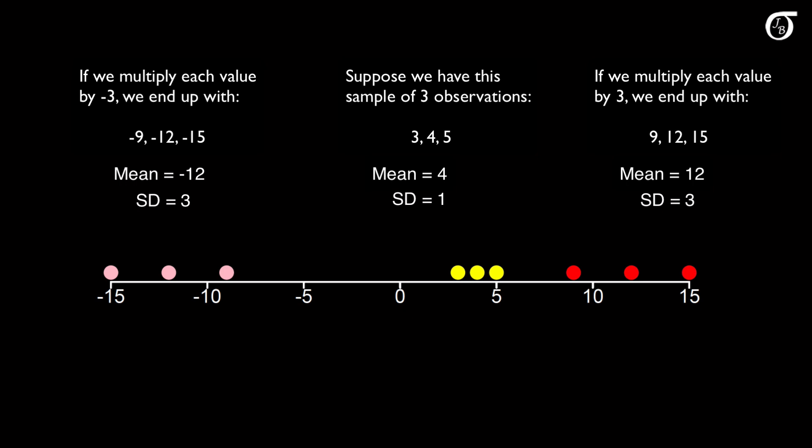I'll put a link in the description to my video proof of this for those that are interested — it's not very difficult to show. Now what about the sample variance? The standard deviation is the square root of the variance, and vice versa. For the original observations the variance is 1. When we multiply by 3 or −3, the standard deviation is 3, so the variance is 3 squared, or 9. Formally, the new variance is the square of the multiplicative constant times the old variance.